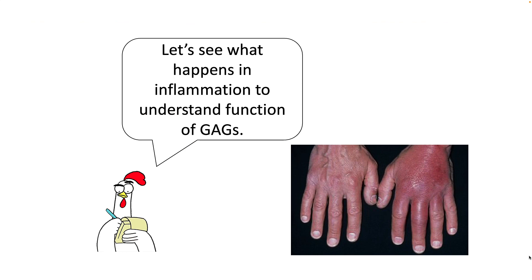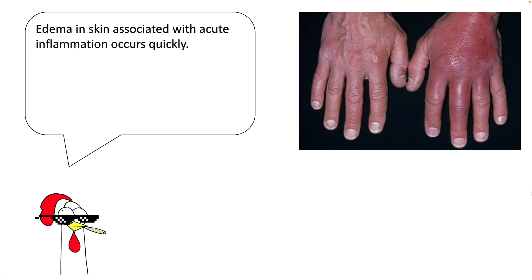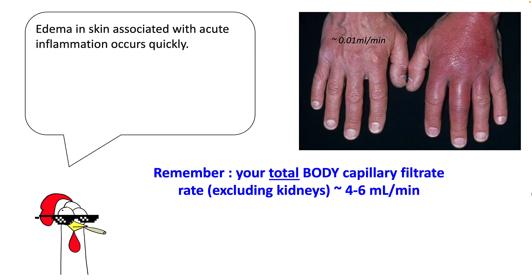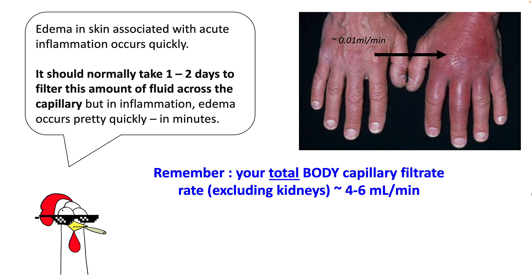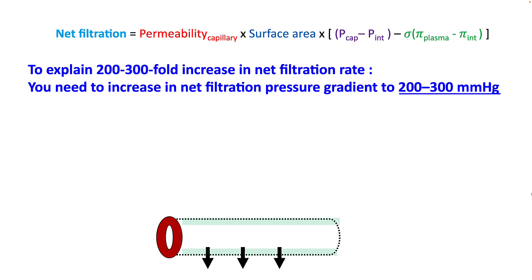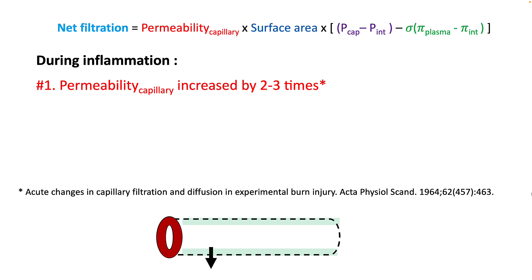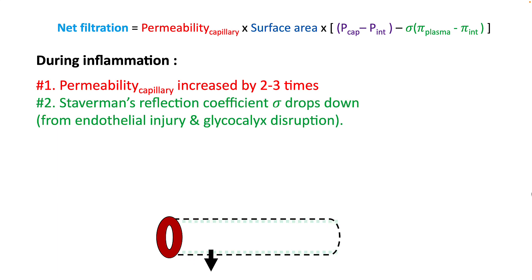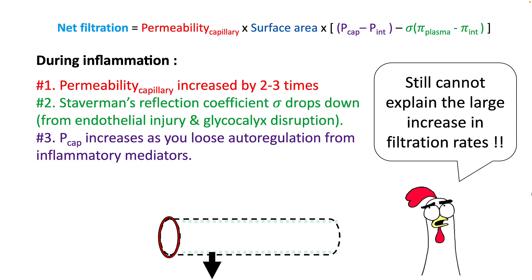Let's understand the function of glycosaminoglycans in inflammation. Edema in the skin associated with acute inflammation occurs very quickly. Total body capillary filtrate rate excluding kidneys is around 4–6 ml per minute, so going from a normal to an edematous hand at this rate would normally take 1–2 days. To explain quick-onset edema, fluid flux across the capillary must increase by at least 200 to 300 times above normal, requiring an increase in net filtration pressure gradient of at least 200 to 300 mmHg. During inflammation, net filtration does increase because the permeability coefficient increases 2–3 times, the Starling reflection coefficient drops due to endothelial injury and glycocalyx disruption, and peak capillary pressure rises slightly as autoregulation is lost. However, all these factors still cannot fully explain the large change in filtration rates.